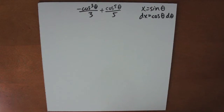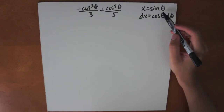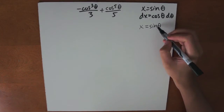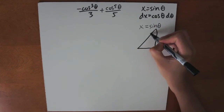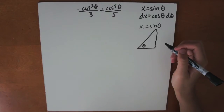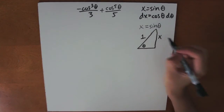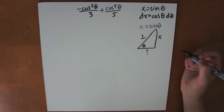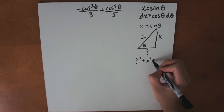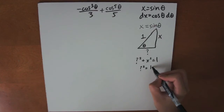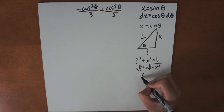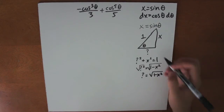So after evaluating that integral, we got negative cosine cubed theta over 3 plus cosine to the fifth theta over 5. Now we must write these trig expressions in terms of x. We solve the original substitution: x equals sine theta, so sine theta equals x. We draw a right triangle — sine is opposite over hypotenuse, so the opposite side is x and the hypotenuse is 1. Using the Pythagorean theorem, the unknown side equals the square root of 1 minus x squared.